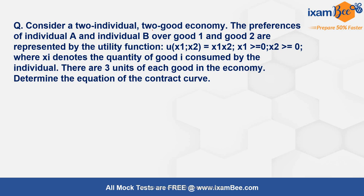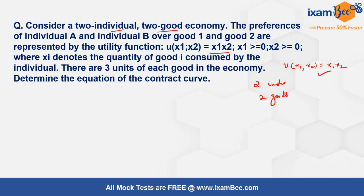Let's discuss this through the help of an example. Suppose there's an economy with two individuals and two goods. The utility function is the same for both individuals: U(x1, x2) = x1·x2, where x1 ≥ 0 and x2 ≥ 0. Here x1 denotes the quantity of good one consumed by the individual.